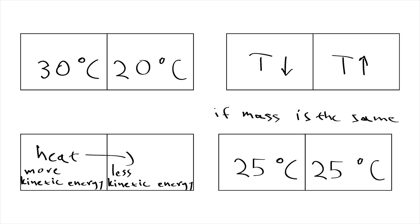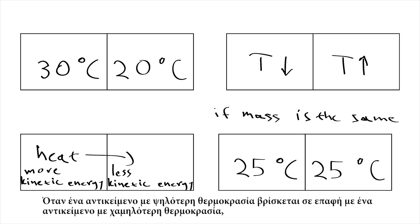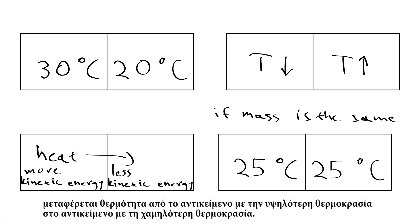Thermal equilibrium and black body and the CMB. If an object with higher temperature is in contact with an object with lower temperature, heat is transferred from the object with the higher temperature to the object with the lower temperature.